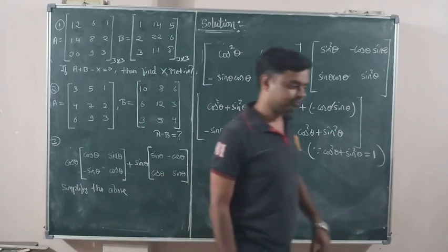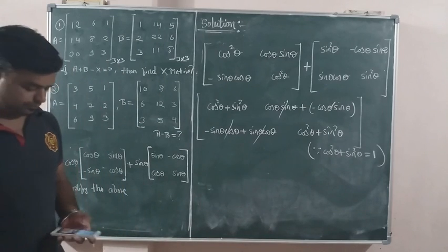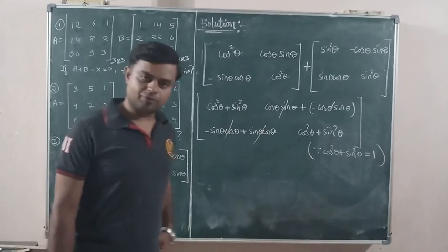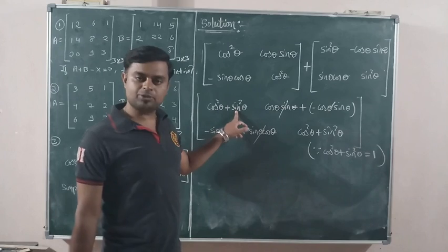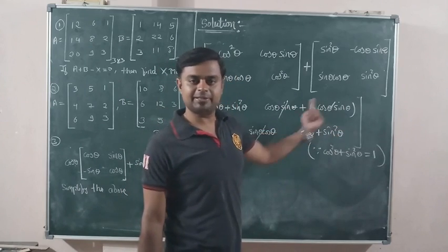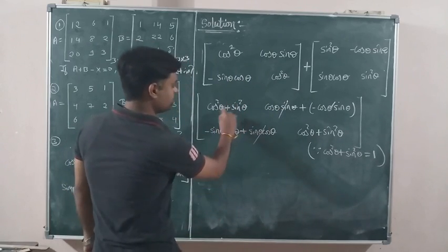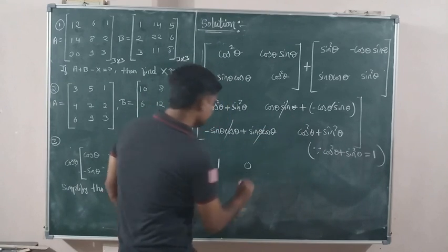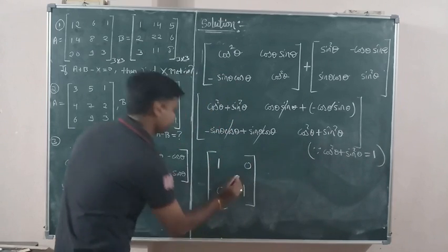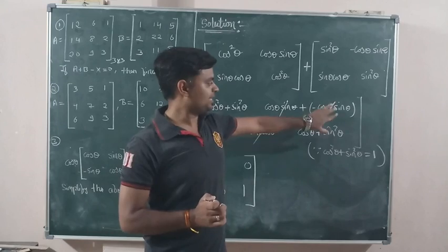The minus sin theta cos theta and plus sin theta cos theta cancel each other out. Similarly, cos theta sin theta and minus cos theta sin theta cancel out — because plus minus gives minus, so they cancel. Cos squared theta plus sin squared theta simplifies to 1. So the diagonal elements become 1, 1, and the off-diagonal elements become 0, 0. This gives us the identity matrix as the final answer.